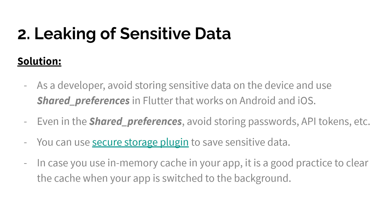Basically, caching is a method that stores images and data in memory to speed up the app's performance. In this way the app doesn't need to download the same data every time — it is available in memory and the application can access it quickly. In case of using in-memory cache, it's a good practice to clear the cache when the app is switched to the background or is closed. You can search for ways to clear the cache in Android and iOS.